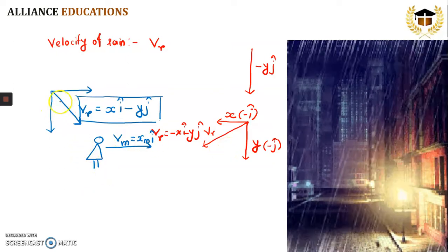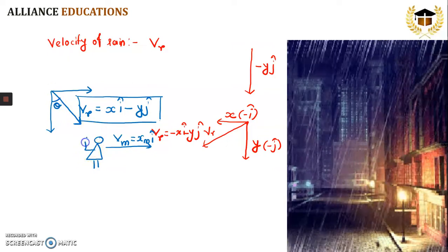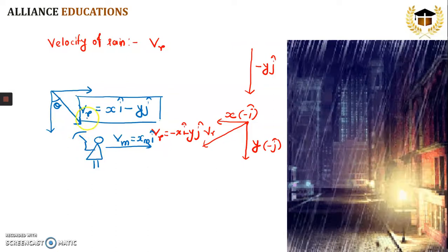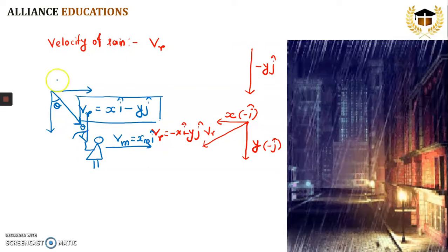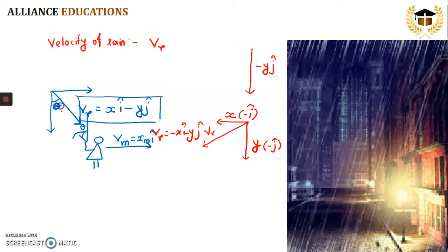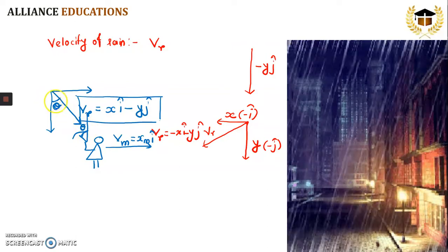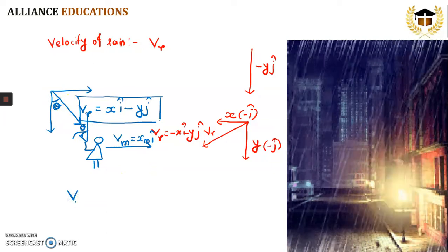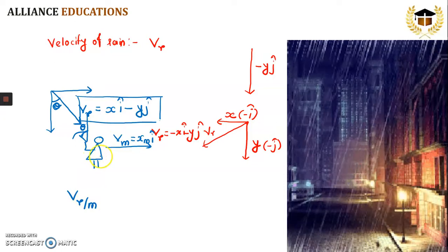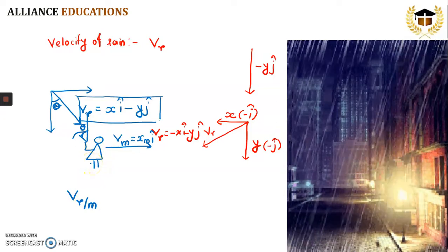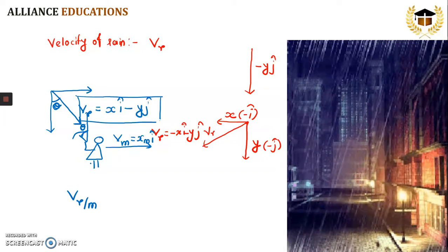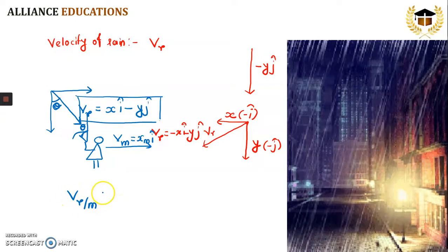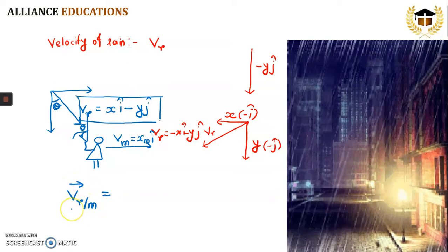Sometimes in a question you are asked to find the angle at which rainfall is occurring or the angle at which a person needs to hold an umbrella — that is, the angle with the vertical. As you can understand from the geometry, the umbrella must be held at the same angle as the rainfall. To find this angle, we require the velocity of rain with respect to the man. To find the angle, we always make the man stationary. This is something we must keep in mind: whenever angle is asked, we use the concept of velocity of rain with respect to man.